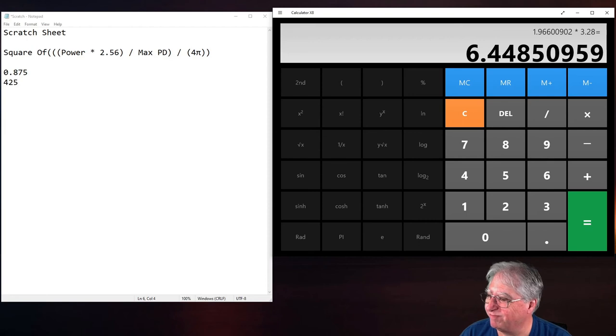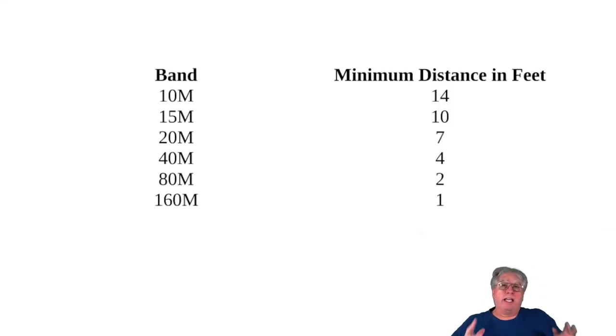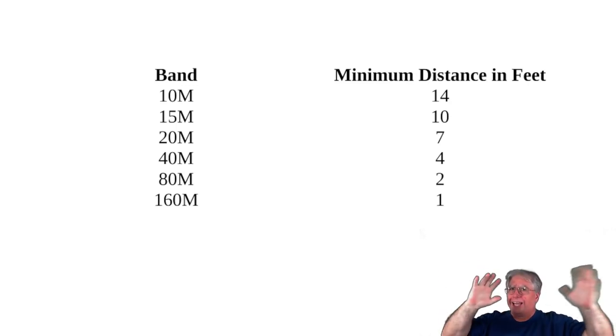Now I'm going to help you out a little bit. Here's the numbers that I calculated out for this little experiment. Notice that 10 meters is 14 feet. That's minimum distance based on the numbers that we calculated here, based on 100 watts and a dipole and what you would call reflection power. And you notice as we get higher and higher in wavelength, our frequency gets lower and lower and our distances get lower and lower. At 160 meters, you have to have a maximum distance of one foot. Use these numbers as a guide when you're setting up your antennas or planning out your antenna deployment.